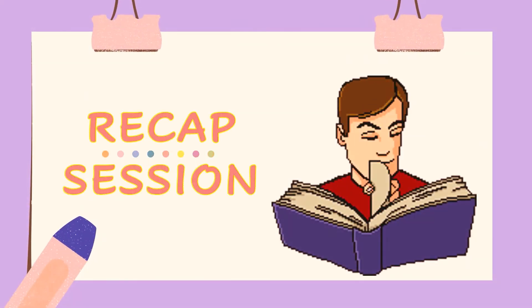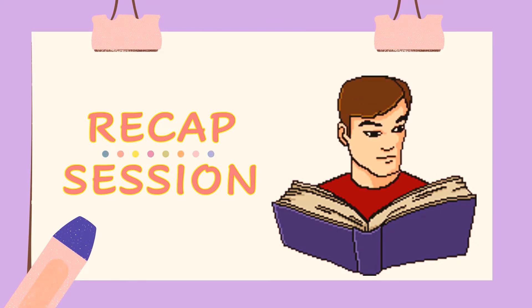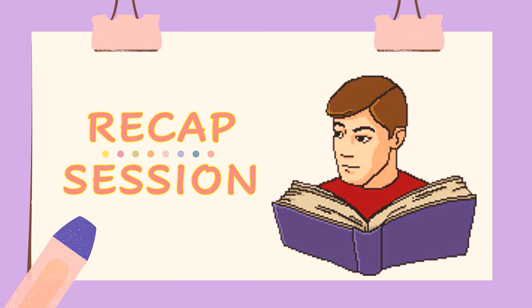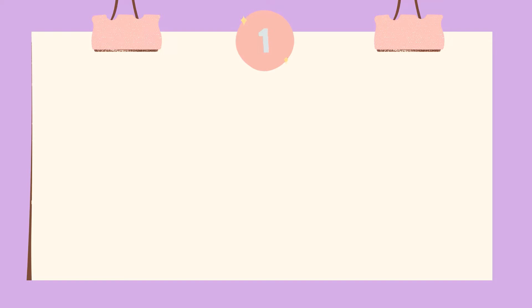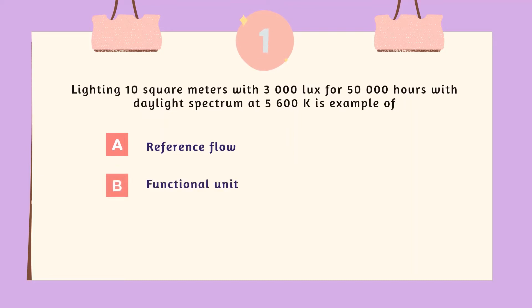Before moving to the next topic, let's recap what we have discussed. Question 1: lighting 10 square meters with 3,000 lux for 50,000 hours with daylight spectrum at 5,600K is an example of: A. Reference flow, B. Functional unit, C. Scope. The answer is B, functional unit.